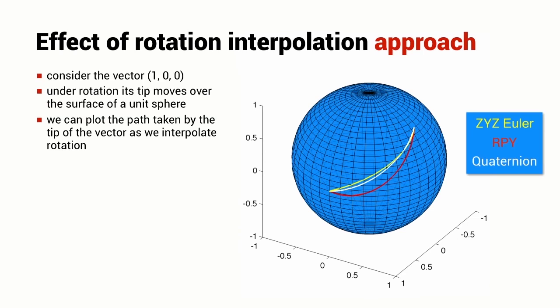Now we might like to compare the effect of different types of rotational interpolation and that's a little bit difficult. It's hard to visualize a particular rotation but one way we can do it is to consider the effect of a rotation on a particular vector. So here I've chosen the x axis which I can represent by a vector 1, 0, 0 and I can apply these three different rotation sequences to that vector.